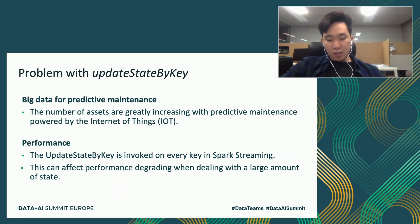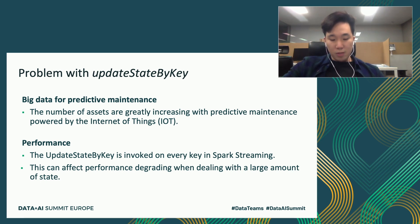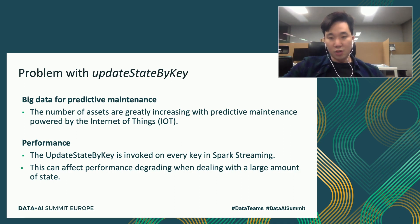However, as data grows and the number of assets and their parameters greatly increases, the previous method caused performance degradation. Considering the method is invoked on every key in the stream, if the key set becomes large, the overall performance of the system will be very degraded. The method needs to iterate all keys even if there are no incoming updates, and this behavior can affect performance when dealing with a large number of keys.